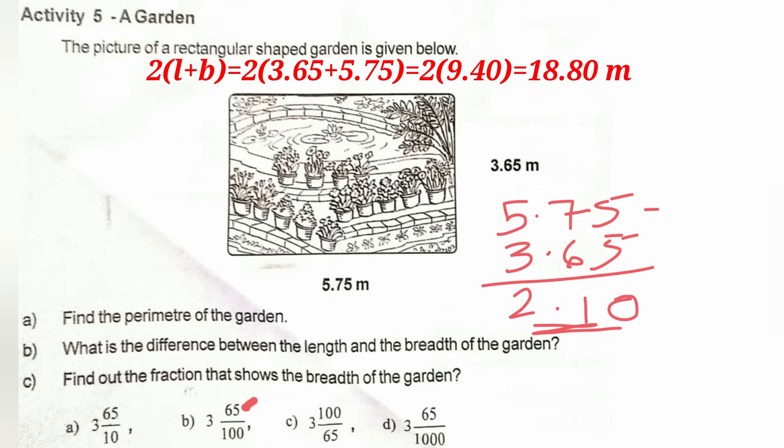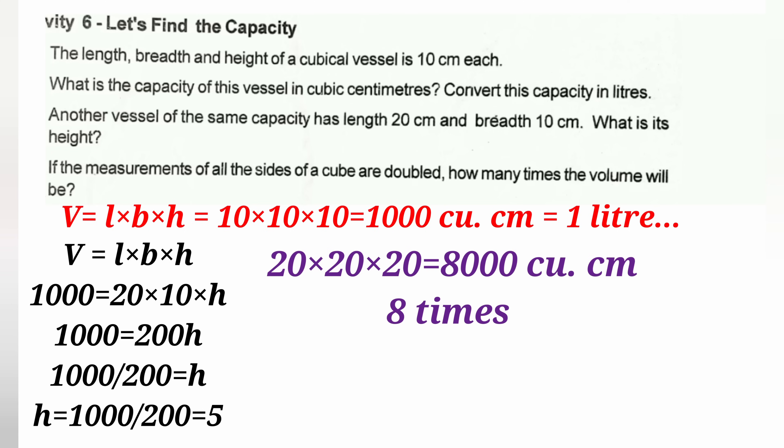The difference between the length and the breadth of the garden is 5.75 minus 3.65, which equals 2.10 meters. We also need to express the breadth as a fraction: 3.65 equals 365 by 100.